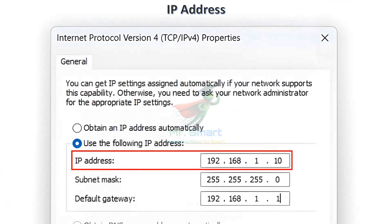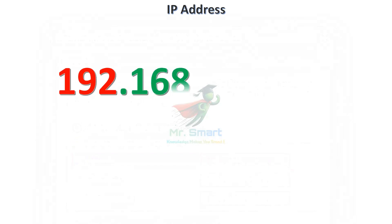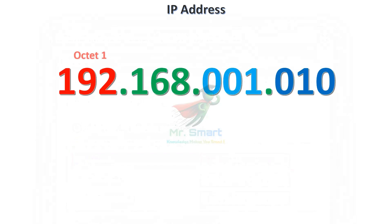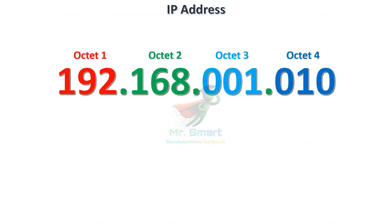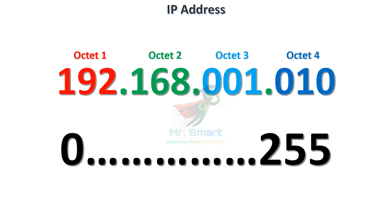An IP, or internet protocol address, is a unique identifier for a device on a network, and it looks like this. It consists of four octets, each ranging from 0 to 255. Think of an IP address like a home address for your device.